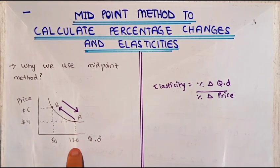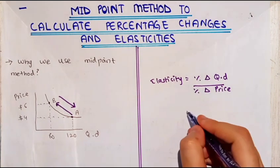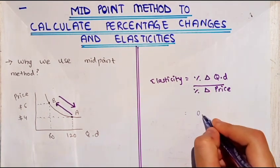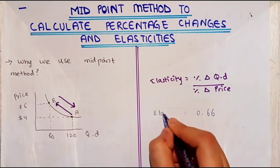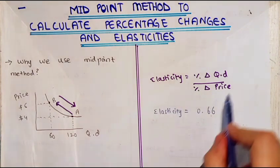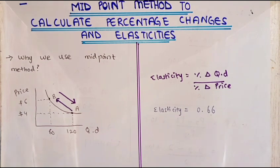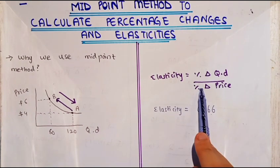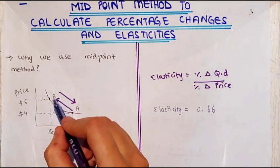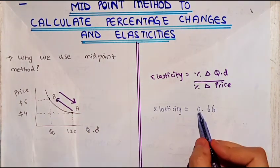When we apply the values of Q1, Q2, P1, P2 to the formula for this method, you will get to understand that the elasticity equals 0.66. Now we apply this method to calculate the elasticity but going from point B to A. From A to B we calculated it as 0.66.